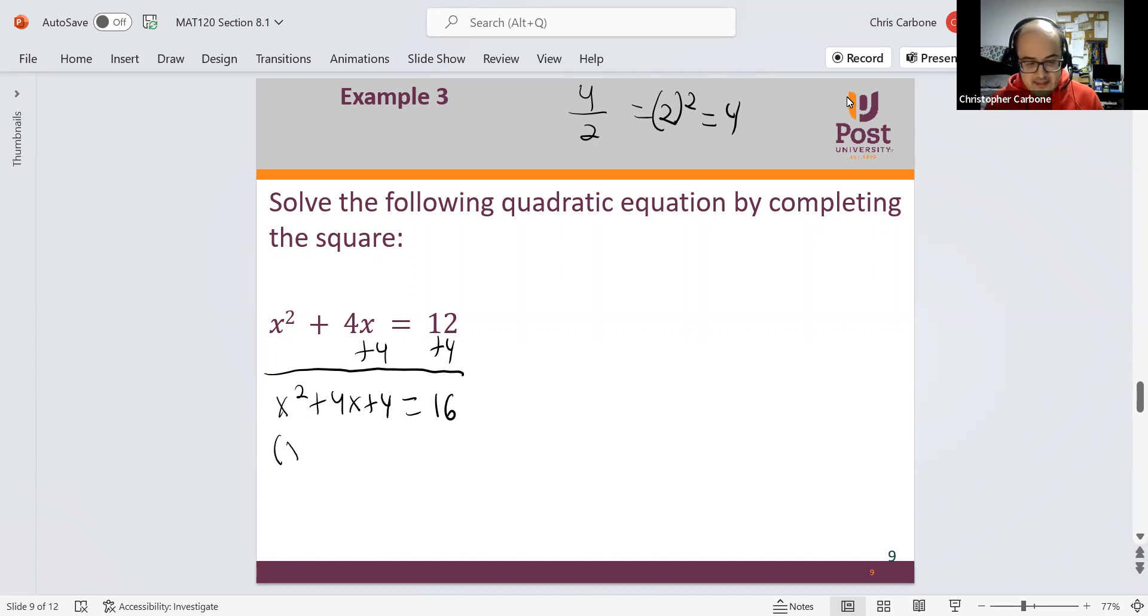Left side factors to be x plus 2 squared equals 16. Then taking the square root of both sides, this makes x plus 2 equals positive or negative 4. So the two numbers we would get, when we subtract them, make negative 6. And when we add them, make positive 2.